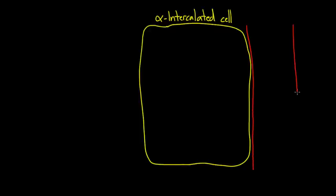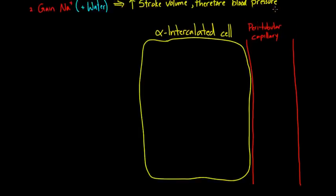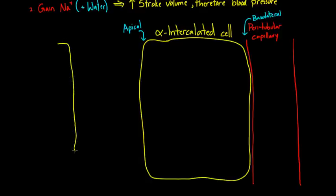Here's a blood vessel — this is our peritubular capillary running alongside our cell. We have the basolateral surface and the apical surface. Urine is collecting on the apical side, and we have blood on the other side. In our case, let's imagine that this blood is getting a little too acidic — more acidic than we would like. So there are too many protons in the blood.